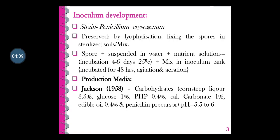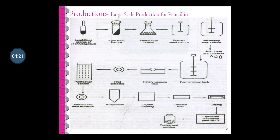As far as production medium is concerned, the exact composition of penicillin production media used in industry is unknown and considered a trade secret. A typical medium described by Jackson in 1958 contains fermentable carbohydrates such as corn steep liquor solids at 3.5%, lactose 3.5%, glucose 1%, potassium dihydrogen phosphate 0.4%, calcium carbonate 1%, edible oil 0.4%, and penicillin precursor. The pH after sterilization is maintained at 5.5 to 6. Inoculum media are similar except lactose and precursors are not added.